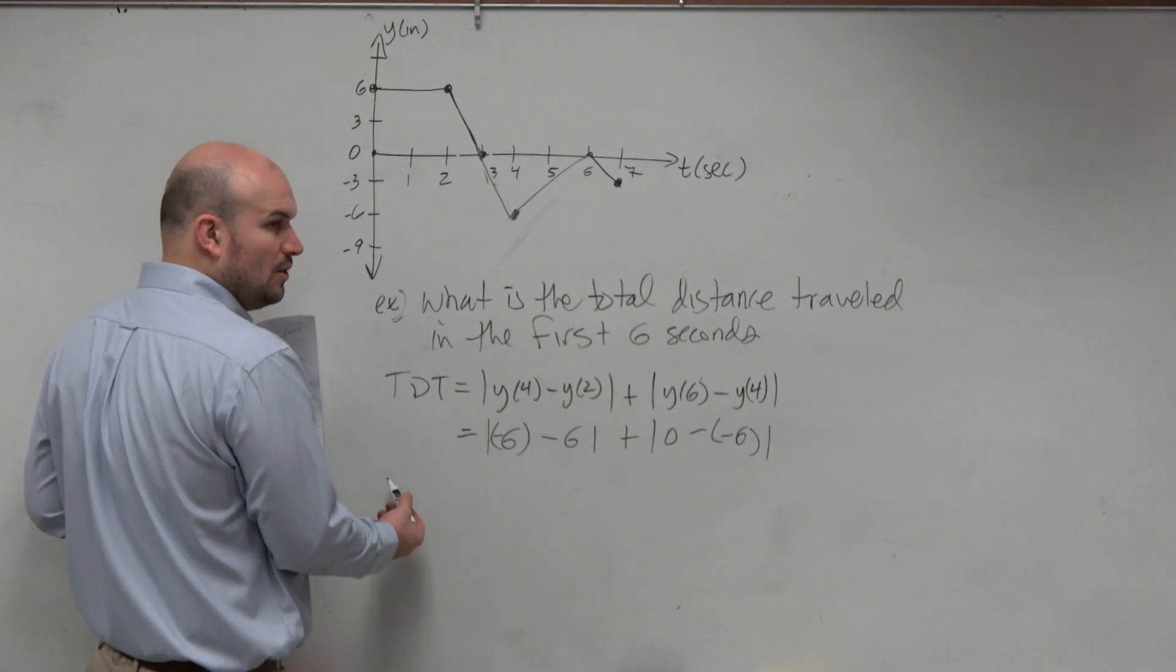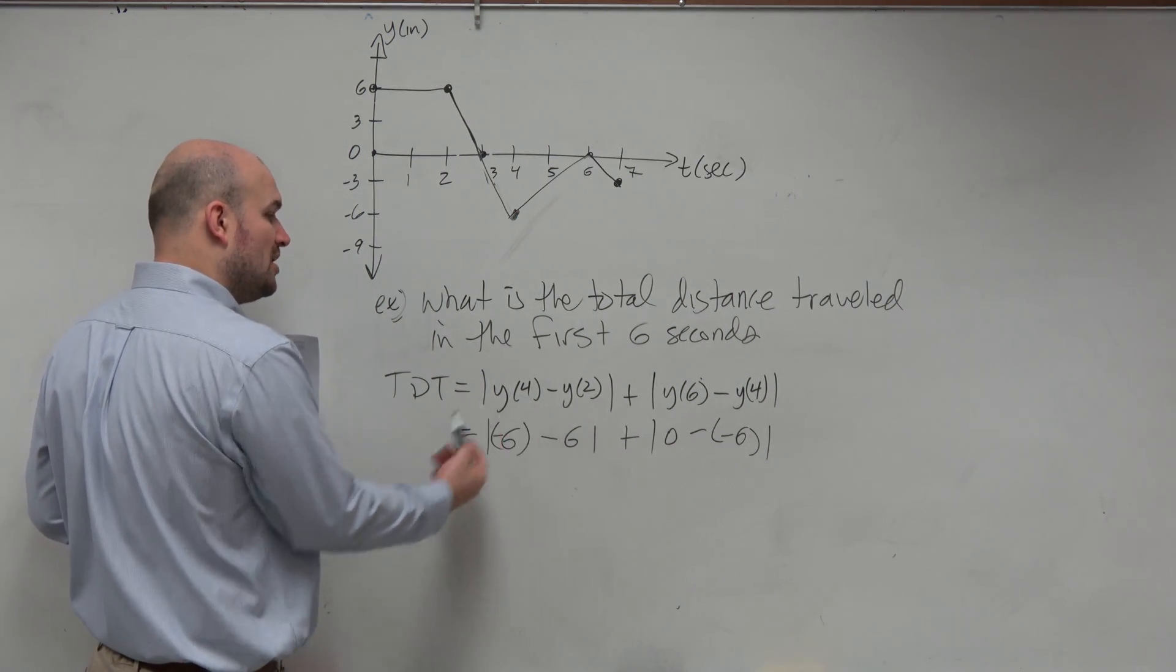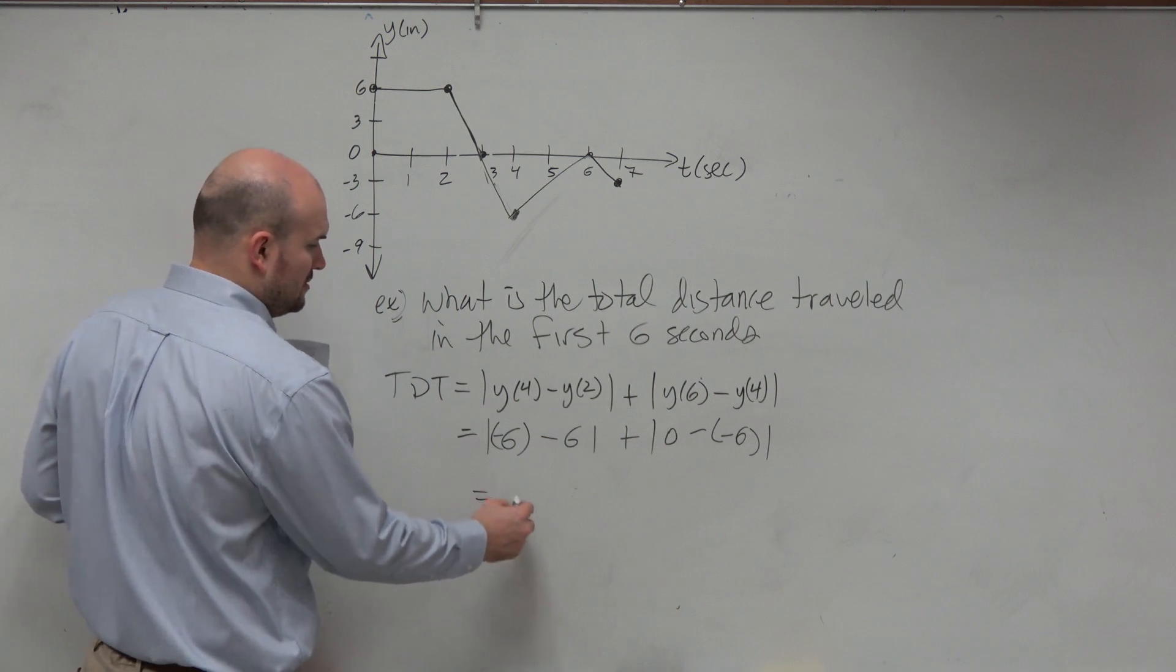So negative 6 minus 6 - if you owe me $6 and borrow 6 more dollars, you now owe me $12.